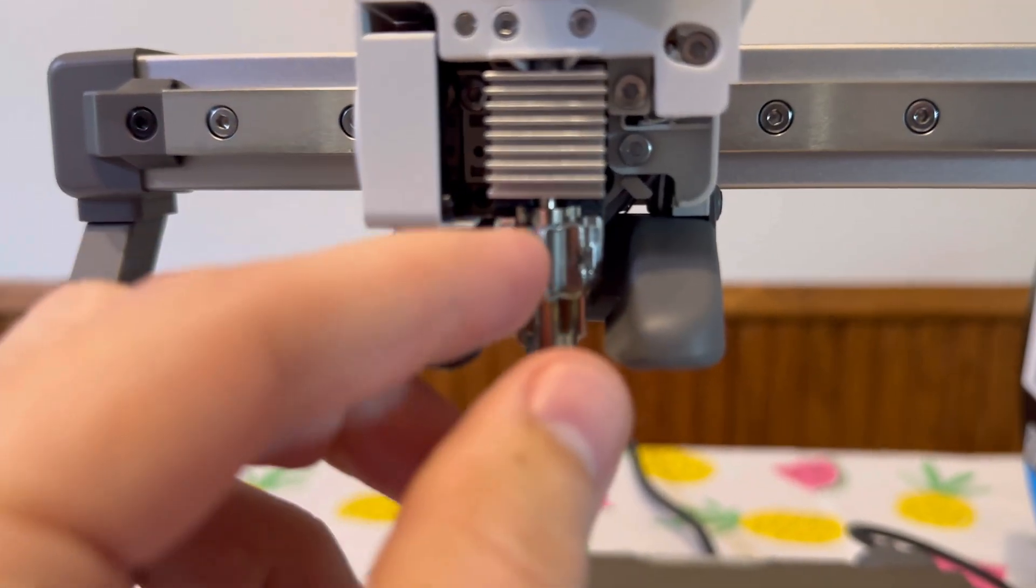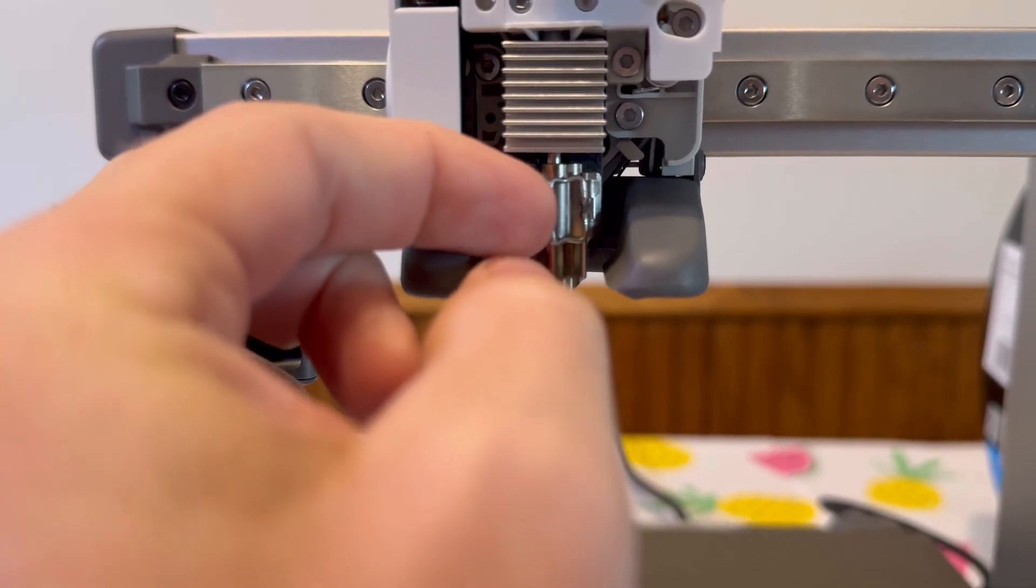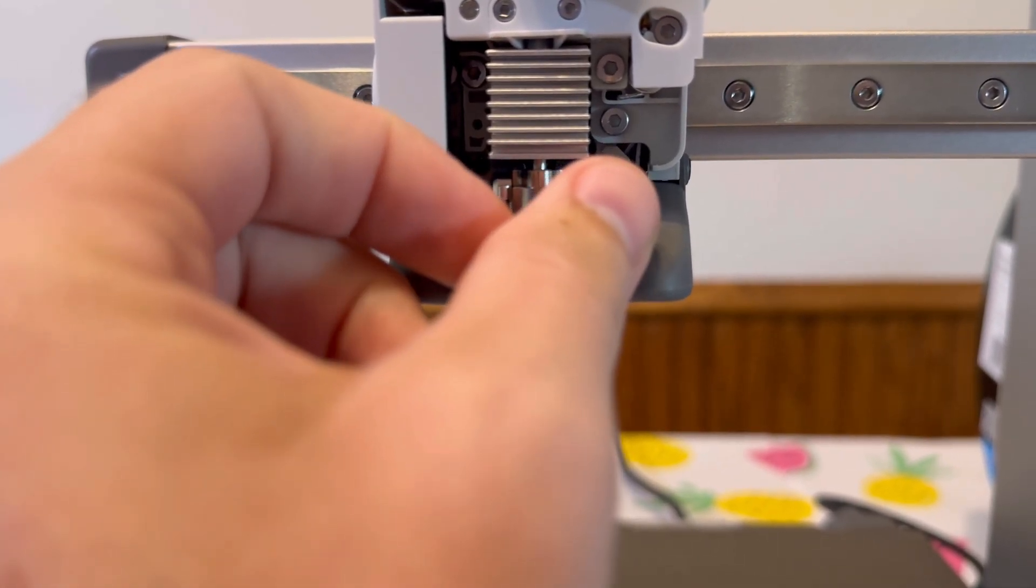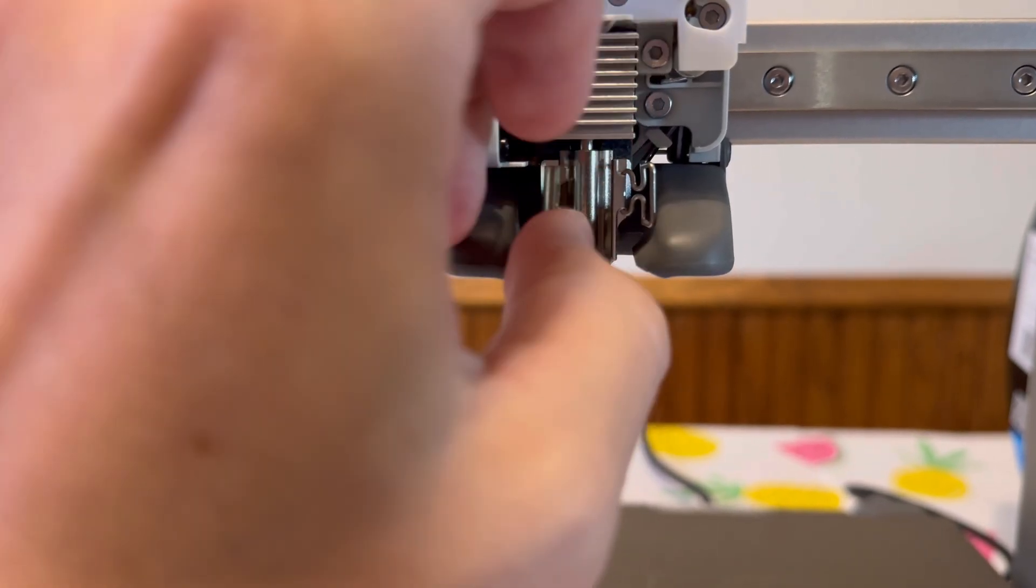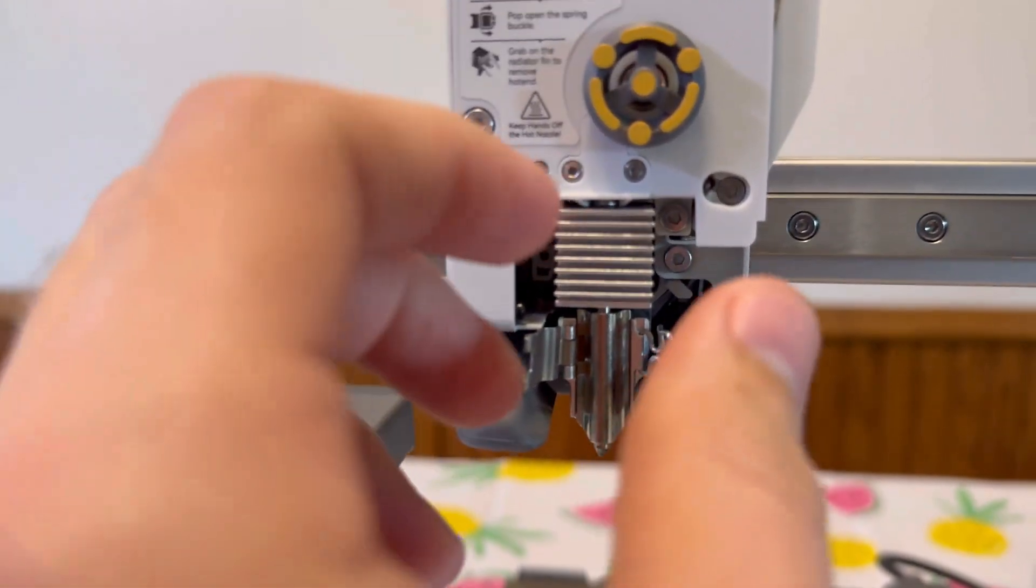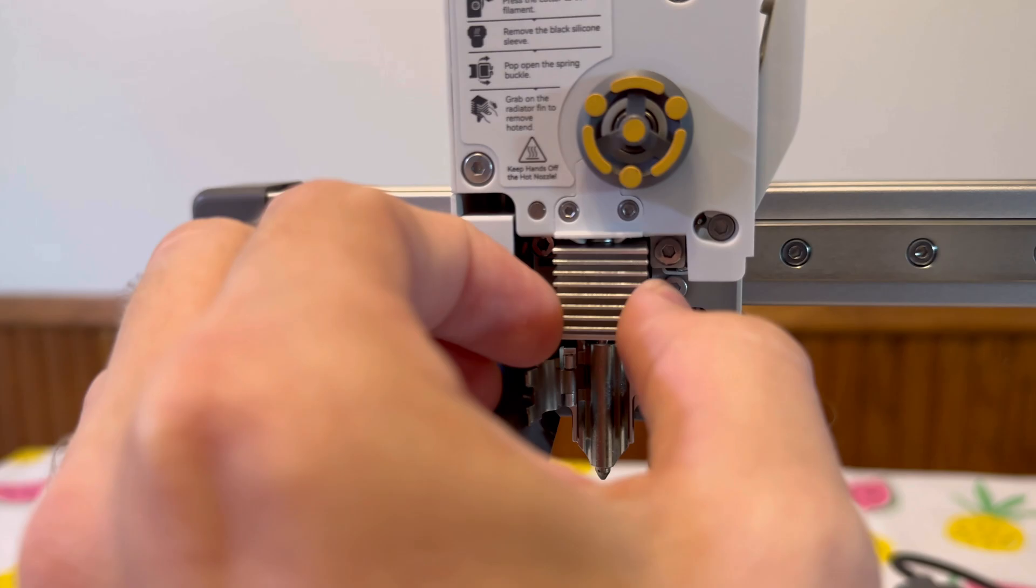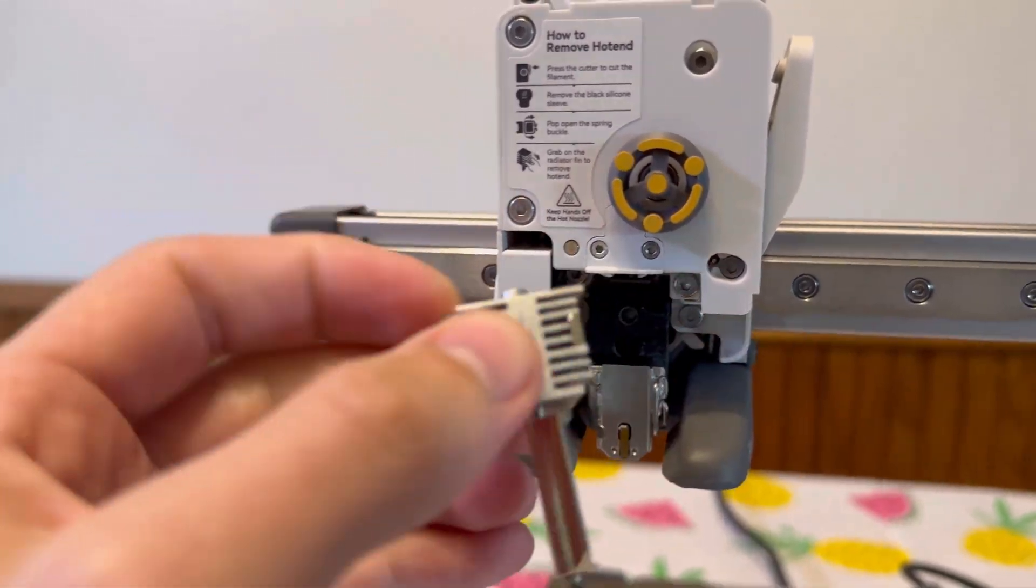Next, we have to undo this little clip in here. So there's a little clasp right here. Undo that to the right and then push this part open. And then all we should have to do is pull this out. It should just come right out like that. And here's the nozzle.